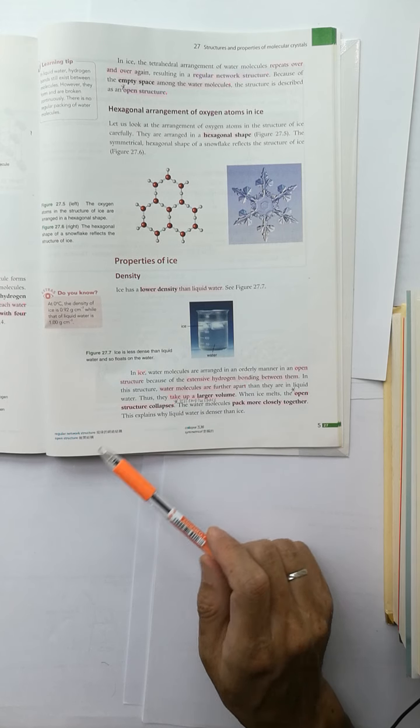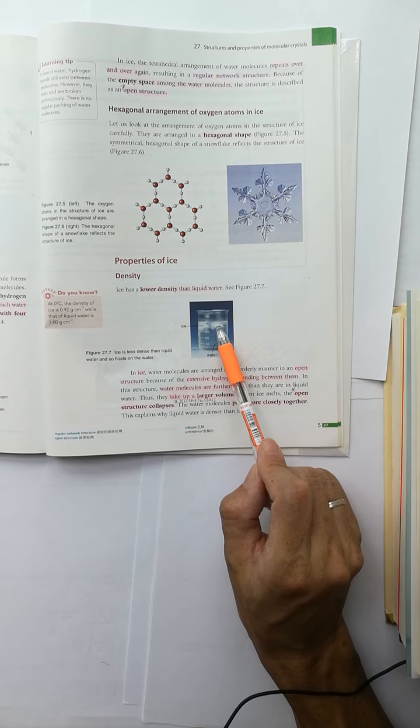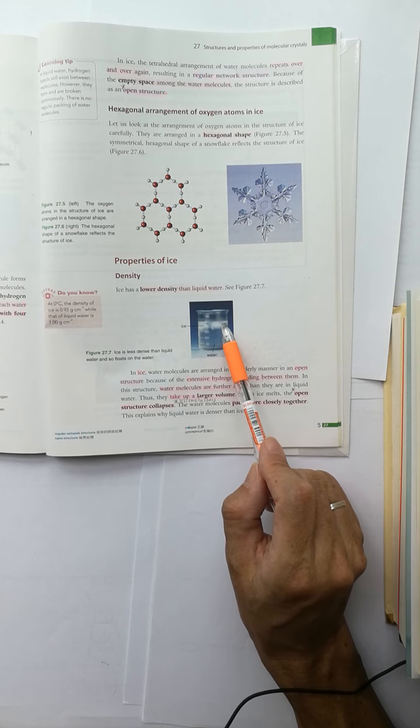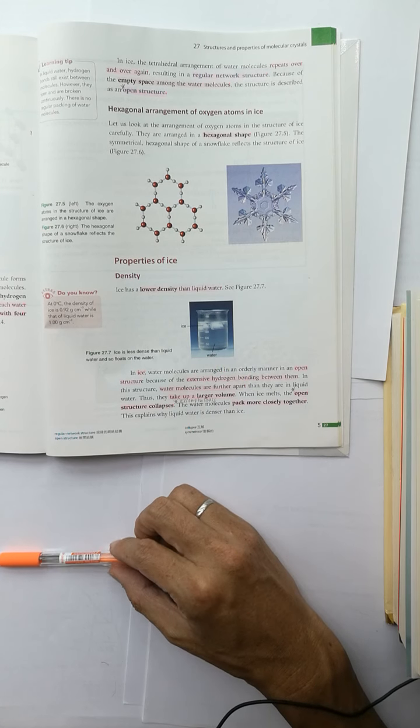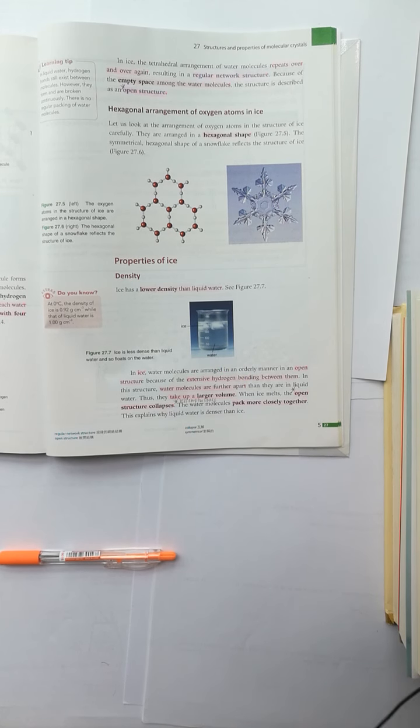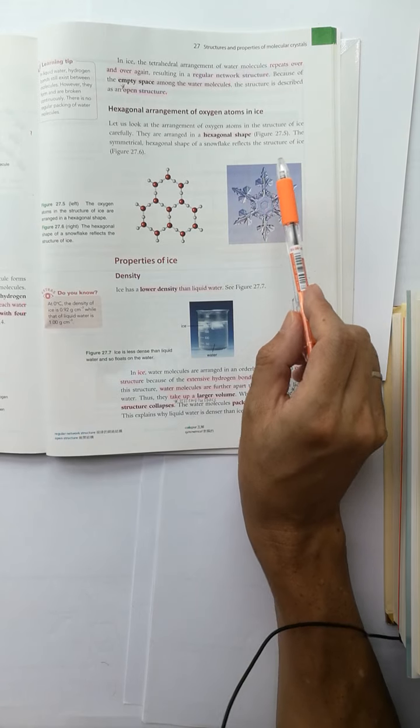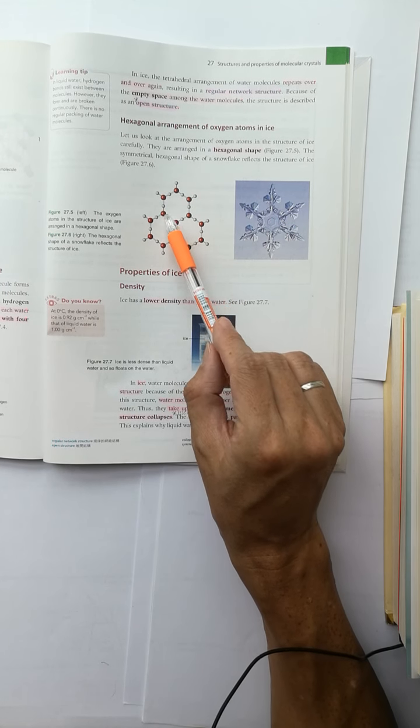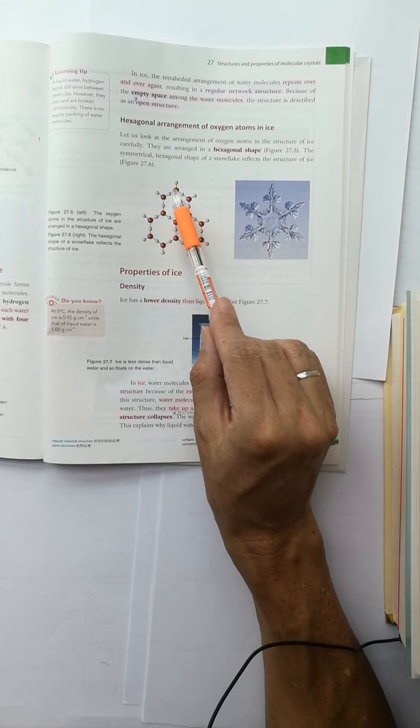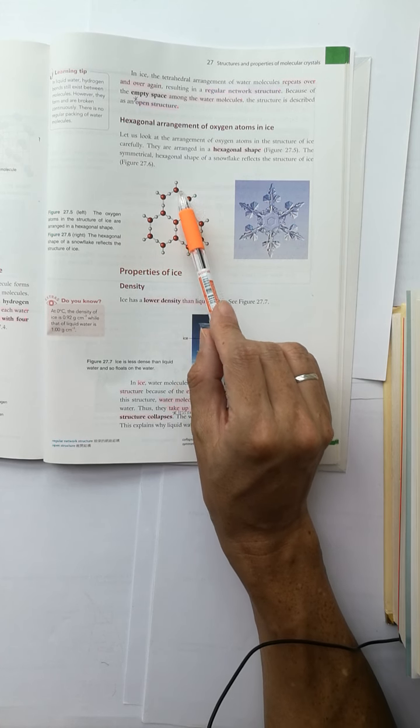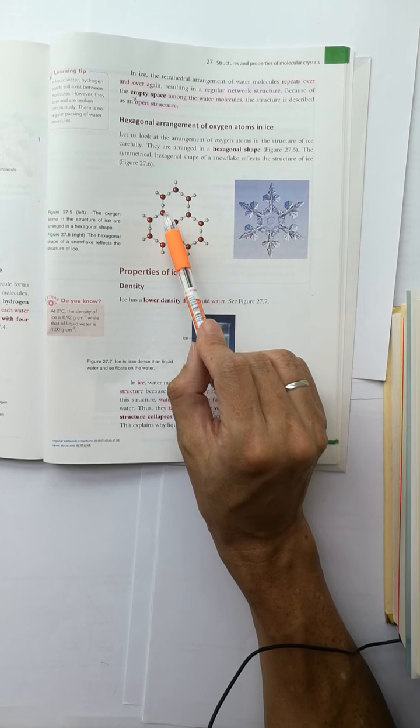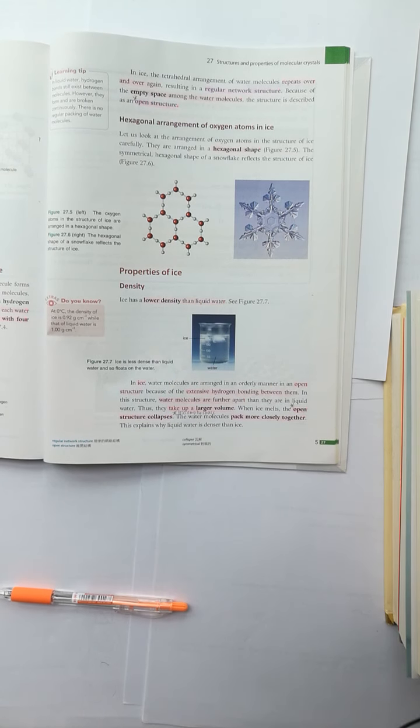So the ice has more spaces among the water molecules, and so it floats on the water surface. And you can see that there are six water molecules arranged to form a hexagonal ring.